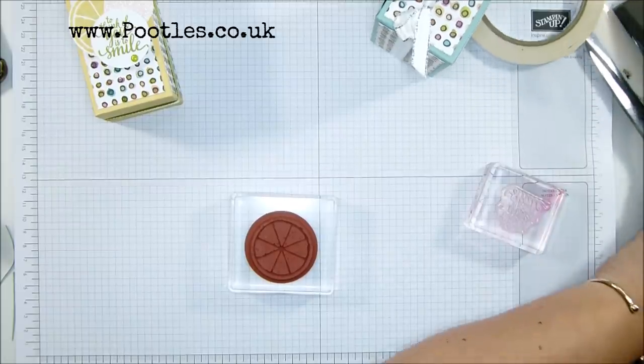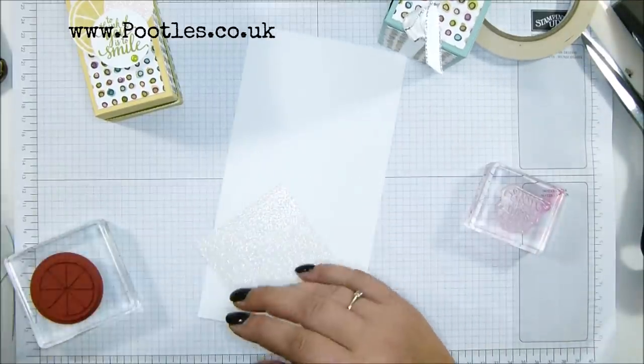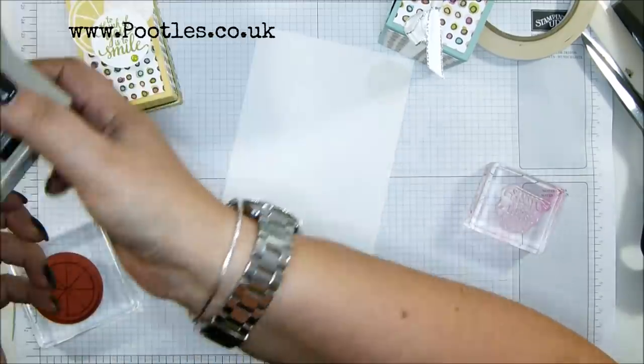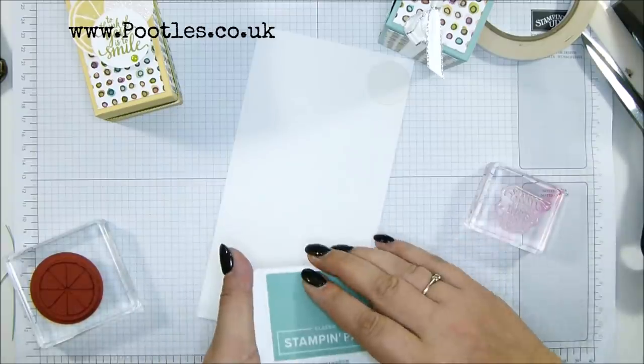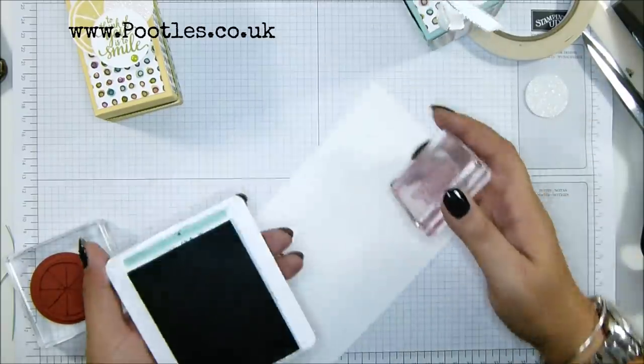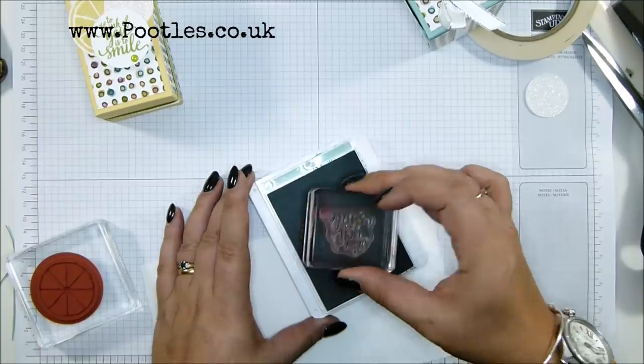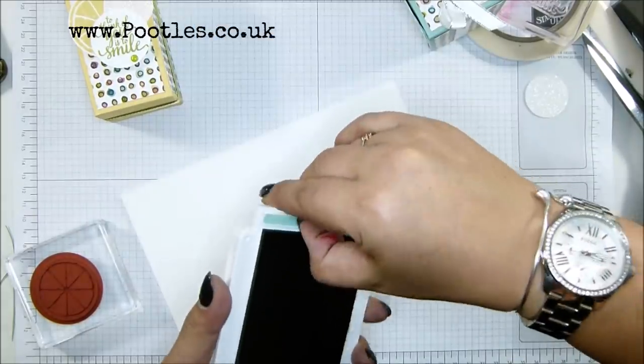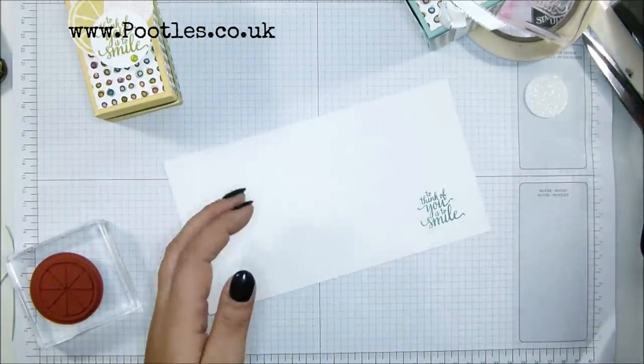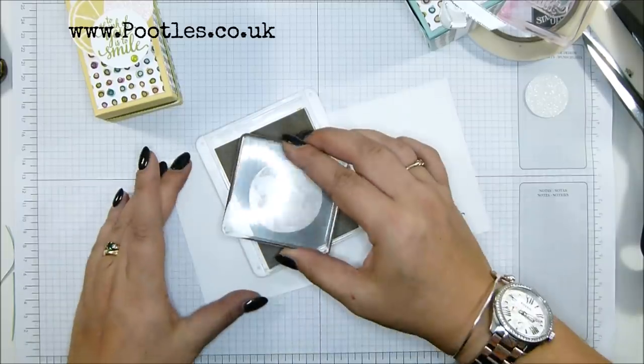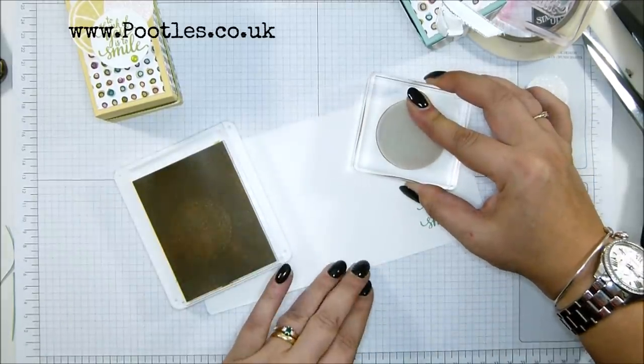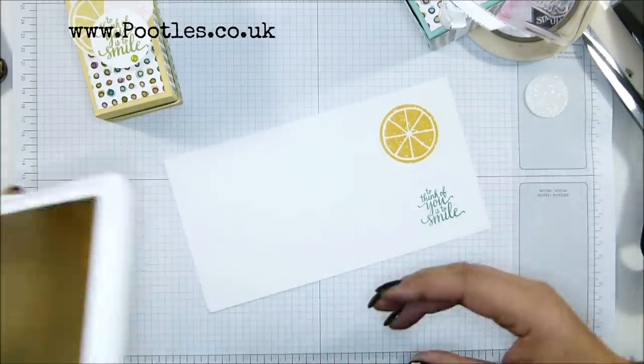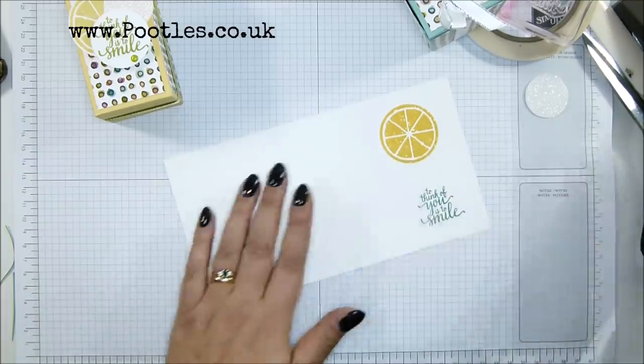I'll have a bigger block. And then my scraps of Whisper White. So first things first, one and a quarter inch for a dazzling diamond circle. I'm going to go mint macaron for the words. And then I've got So Saffron again for my slice of lemon. Oh, that is so saffron. I've re-inked it. Oh well. It'll pale down. Not to worry.